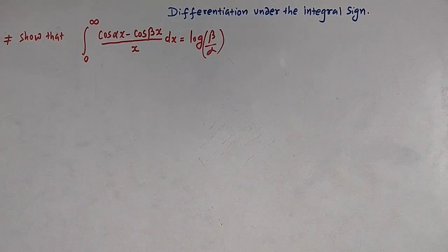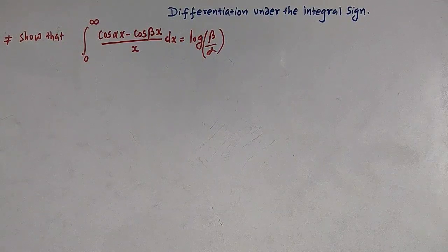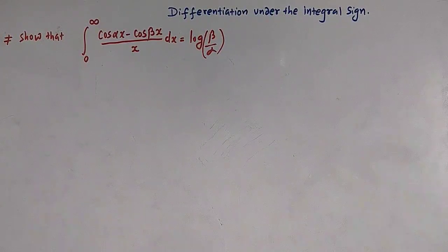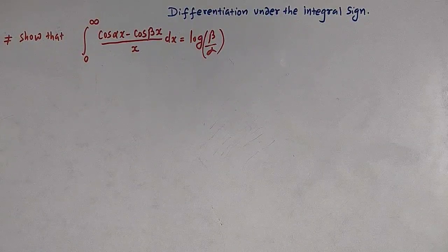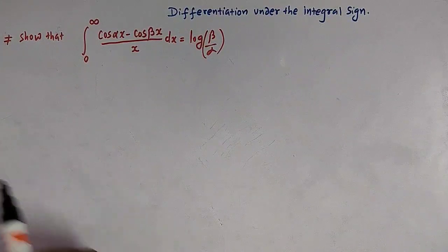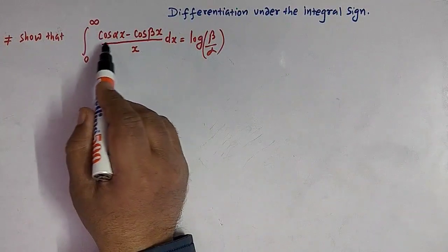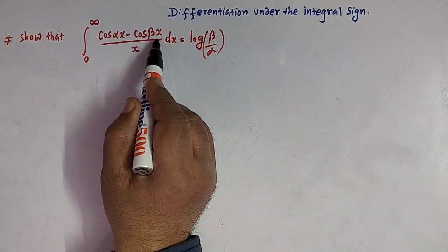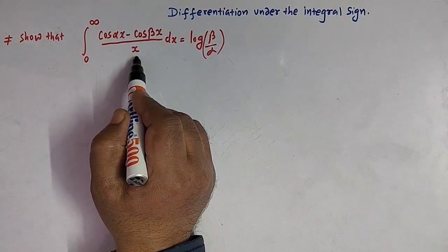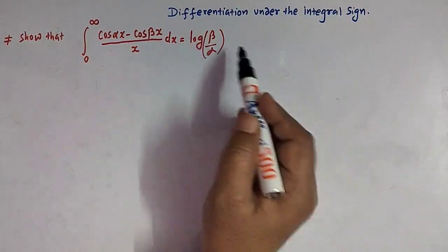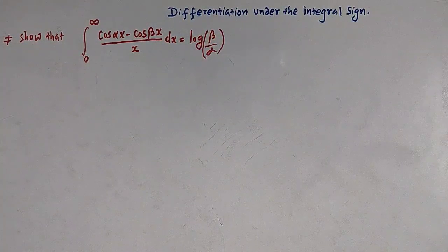Hello viewers. In today's class we are going to discuss one important definite integral which will be solved using the concept of differentiation under the integral sign. We have to prove that the value of the integral from 0 to infinity of (cos αx - cos βx) divided by x dx is equal to log of β over α.